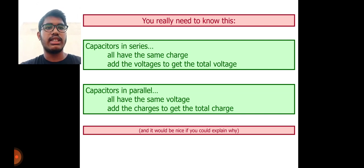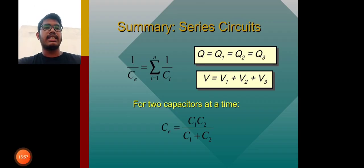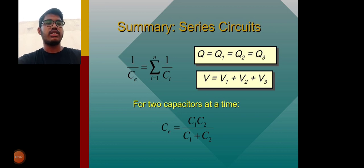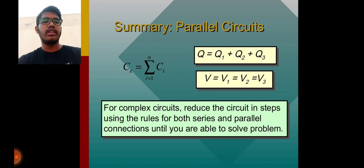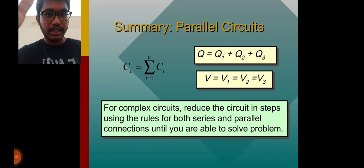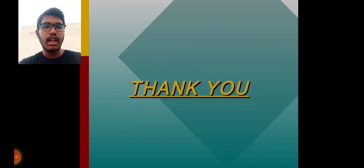In summary: series circuits have the same charge on all capacitors and voltages add; C equivalent equals C1 times C2 divided by C1 plus C2 for two capacitors. In parallel circuits, charges add and potential difference is the same. For complex circuits, reduce step by step following both series and parallel rules to solve the problem. Thank you.